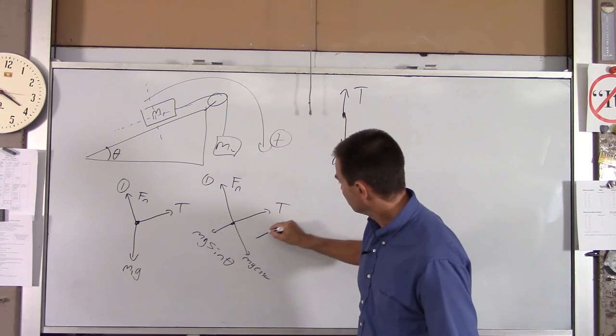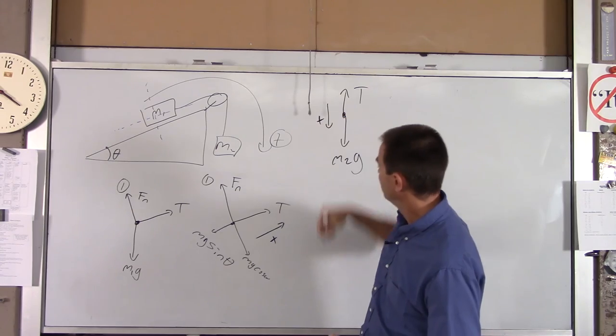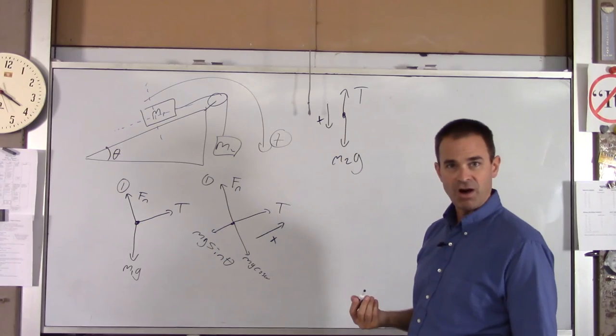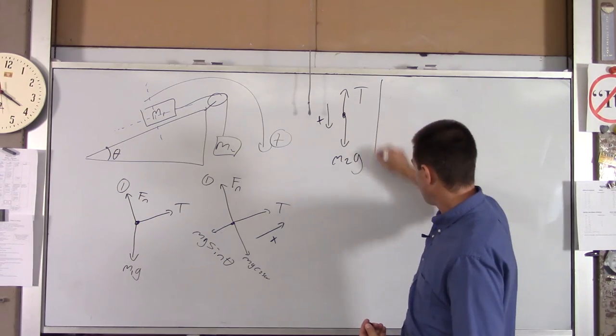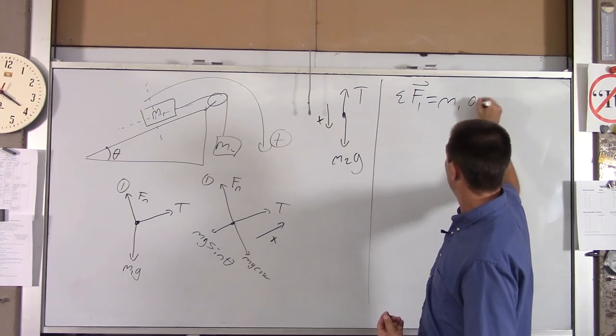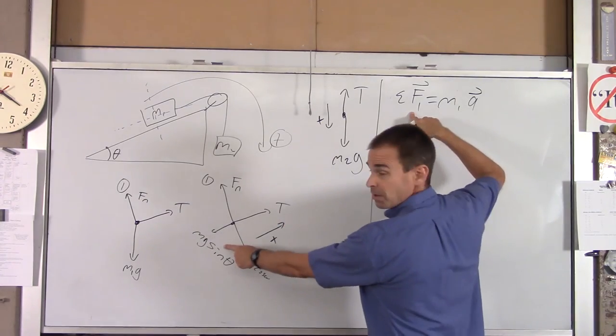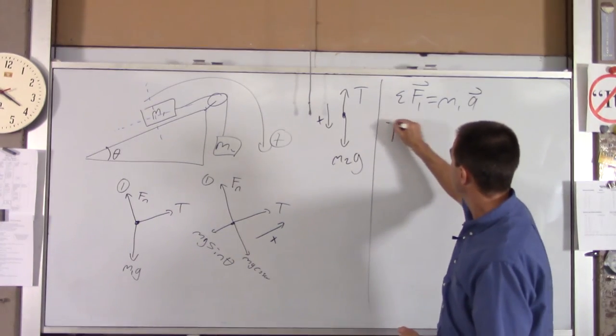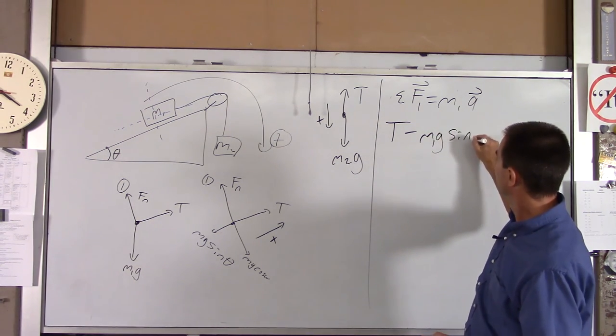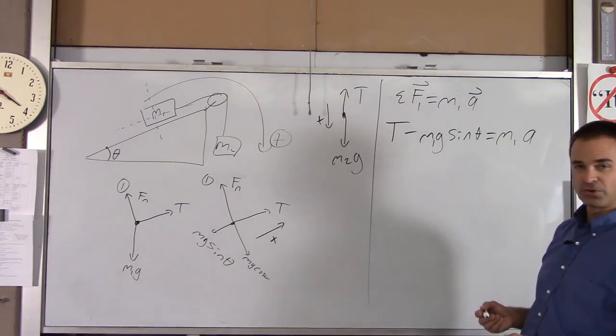For the first block, that weighs positive locally. For this block, that weighs positive locally. For each block, I am going to then write Newton's second law out. So for the first block, we've got net force on block one equals M1A. The net force on block one is T minus Mg sine theta. So I write T minus M1g sine theta equals M1A. So that's my equation of motion for the first block.